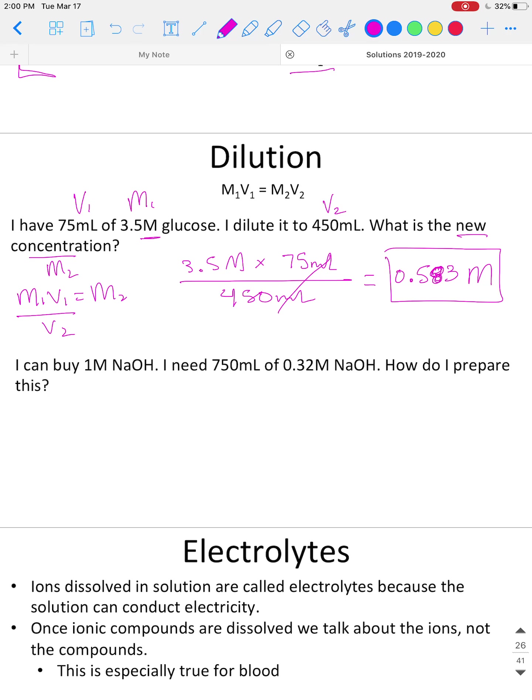Let's work another one. It says: I can buy 1 molar sodium hydroxide (NaOH). I need 750 milliliters of 0.32 molar NaOH. How do I prepare this? So let's go through again and label what variables do we have in our equation. Well, it says I can buy 1 molar, so this is the first concentration that it gives us, so this is M1. And if you notice, it's the way more concentrated concentration. That's M1. It says I need 750 milliliters, so this is the volume of the new concentration. So this is the new volume, so this is actually V2 here.